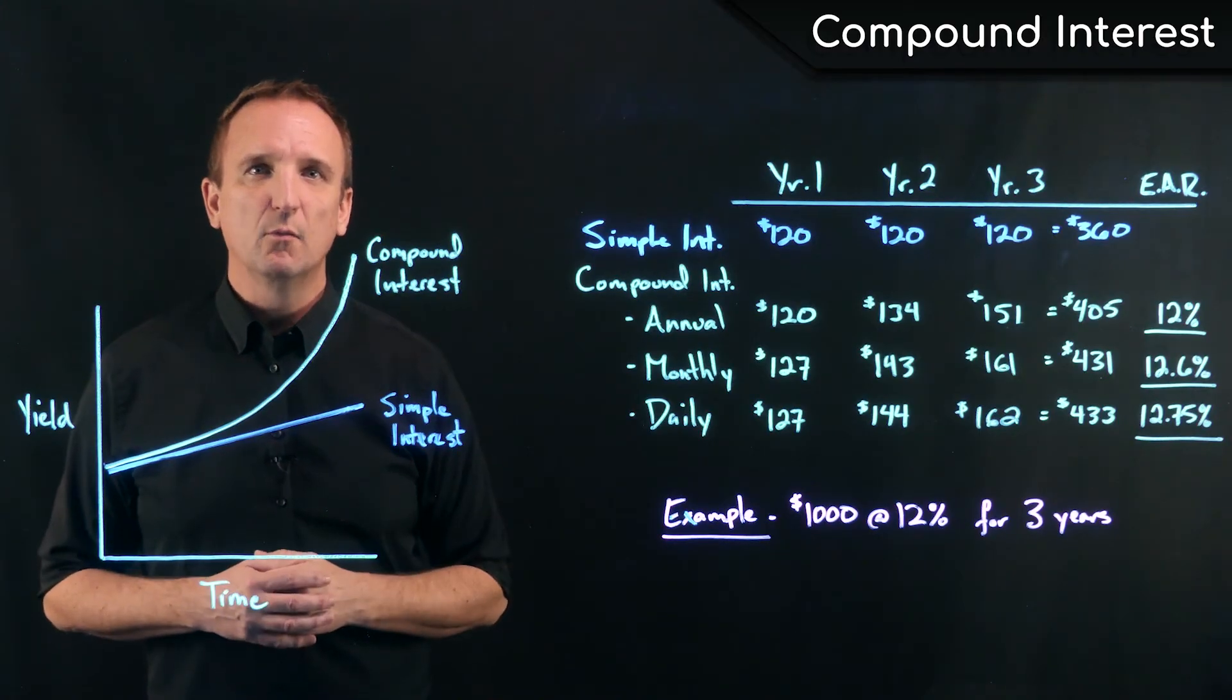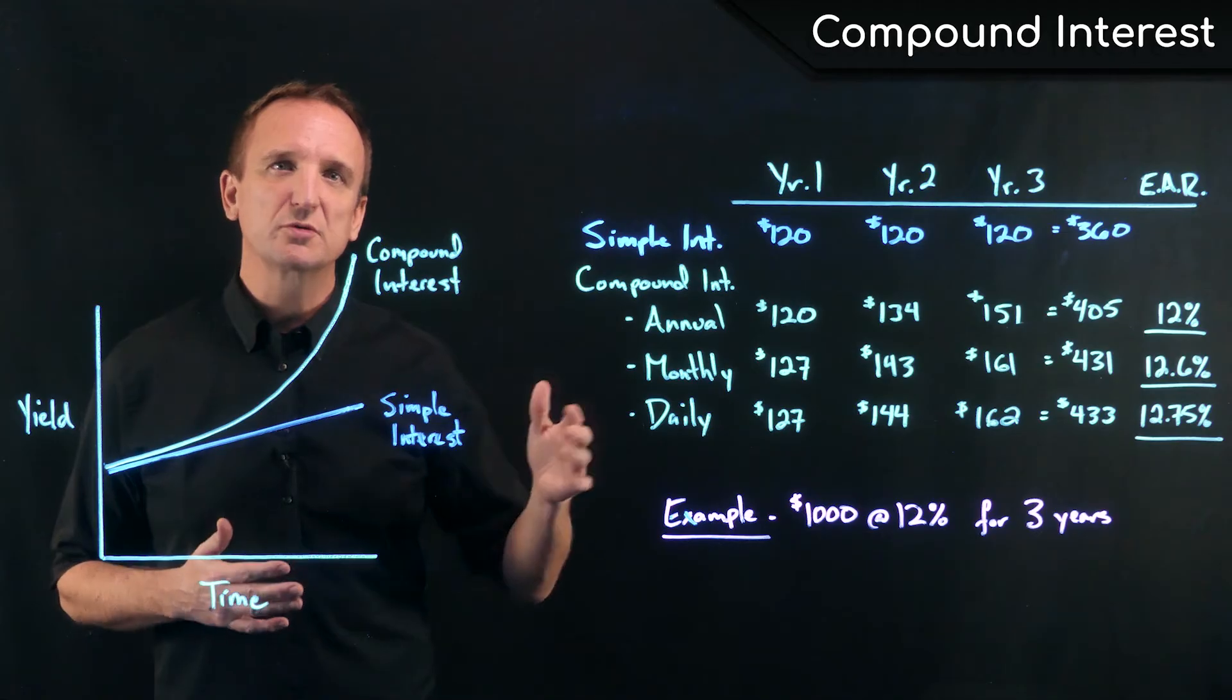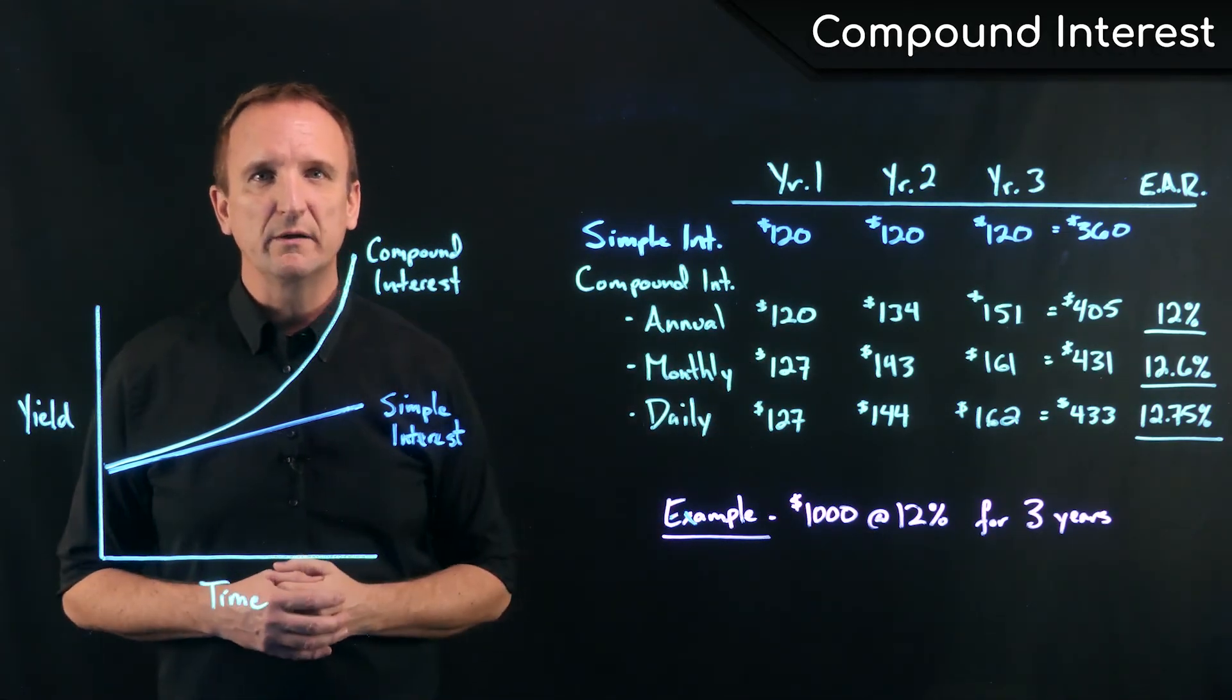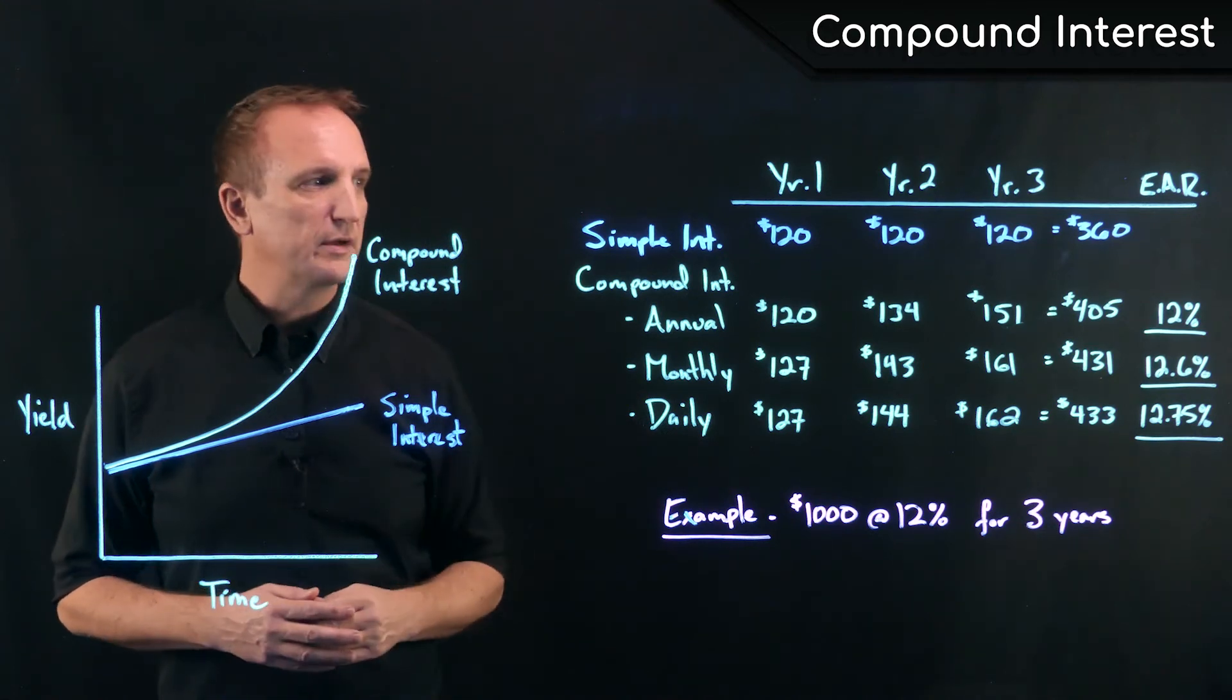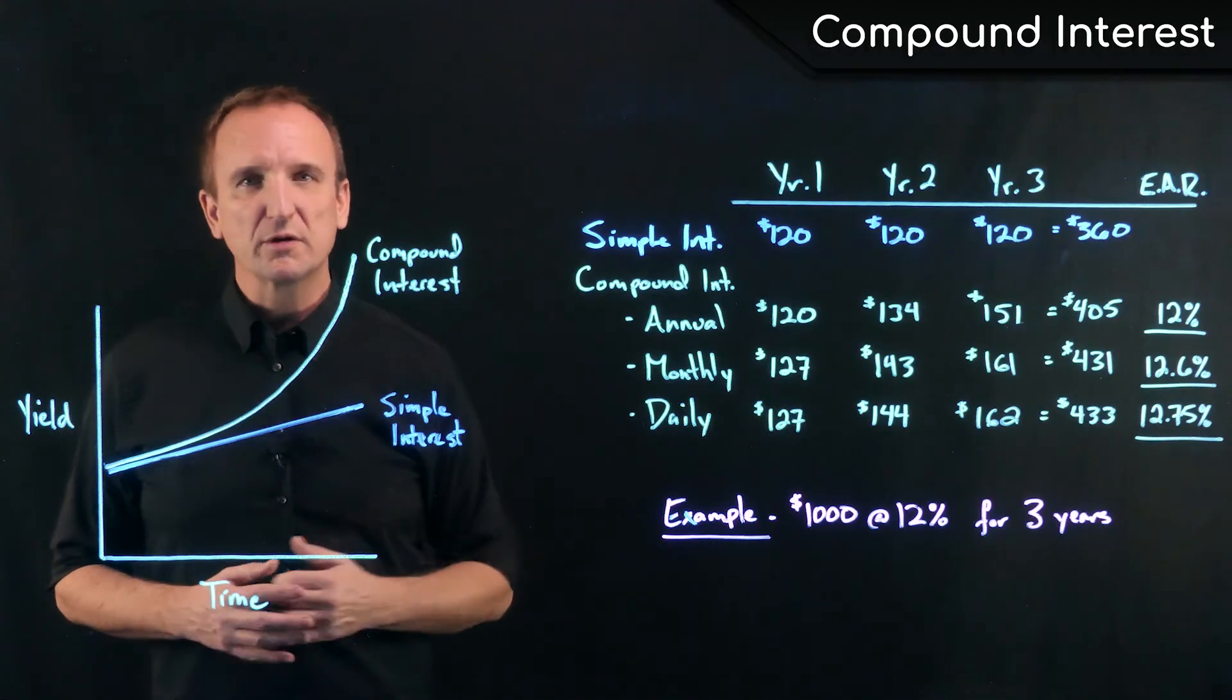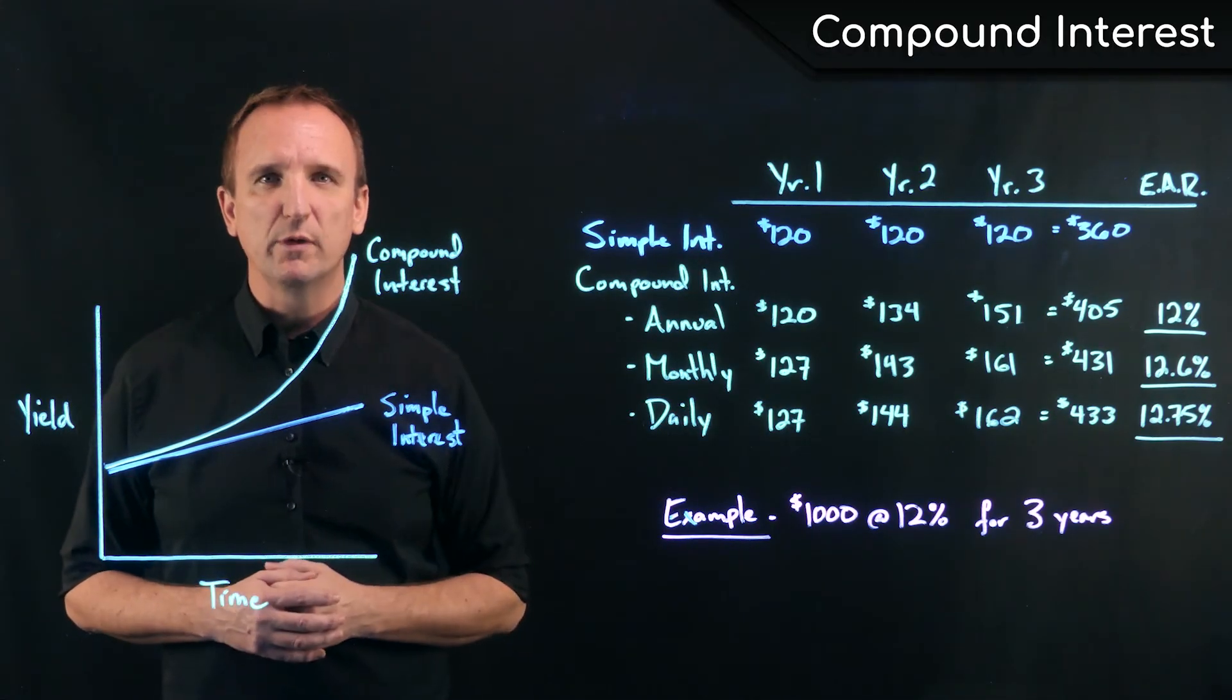But when we're earning extra interest, like each month, more often, it actually increases our yield because we're getting more interest on our interest throughout the year. So the effective annual rate of 12% with monthly compounding is actually 12.6%. And of course, the effective rate for daily compounding is 12.75%.